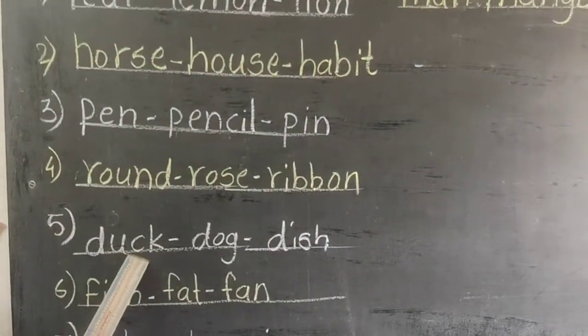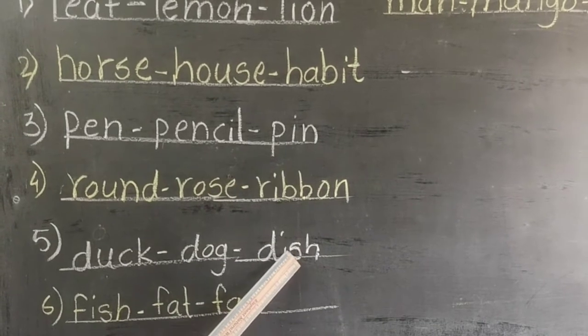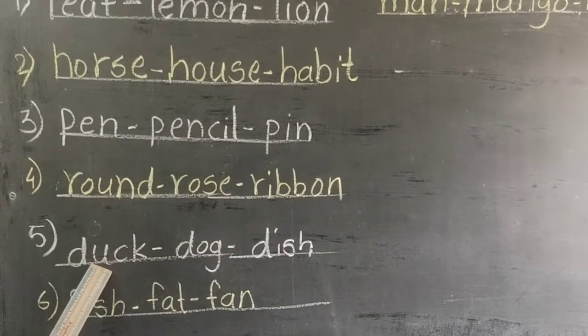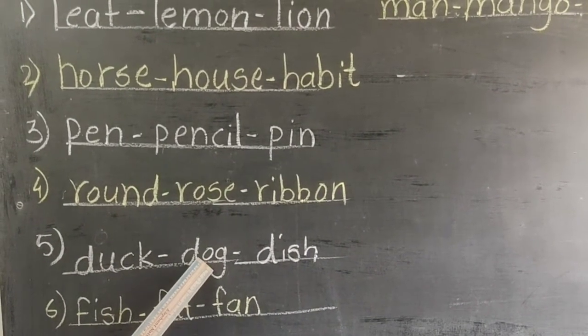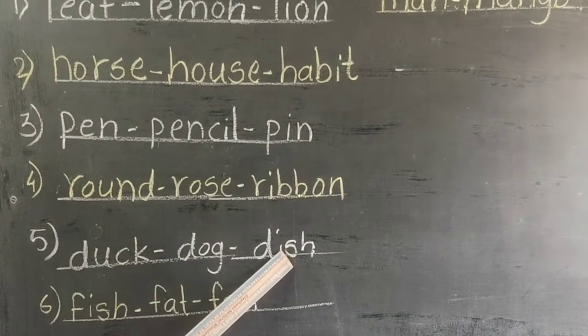Fifth, duck, dog, dish. Duck means butter, duck means kutra, dish means plate.